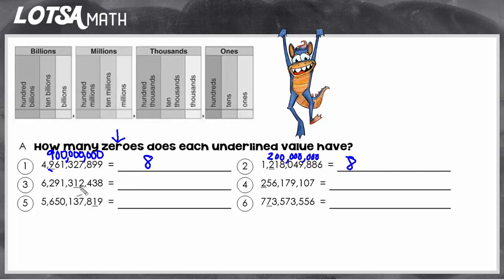Okay, let's look at one more example. So this one is in the ten thousands place, so the value is 10,000. And how many zeros does it have? One, two, three, four. Four zeros.